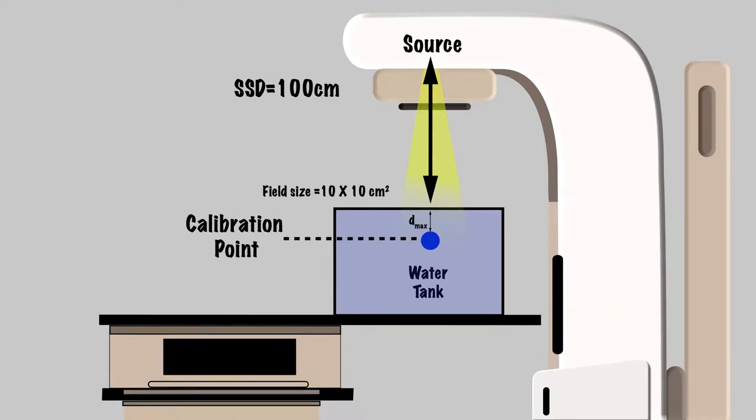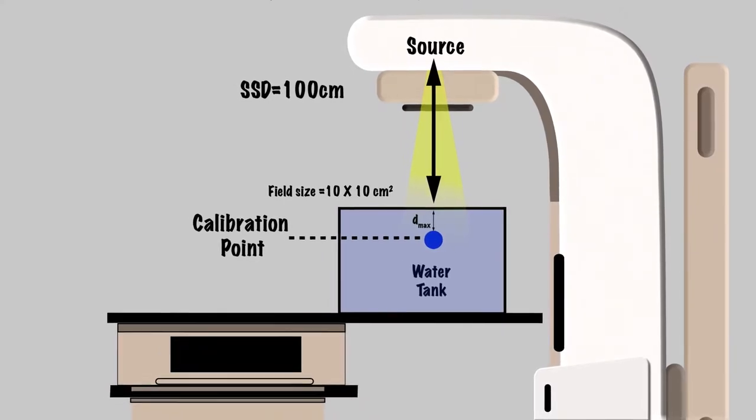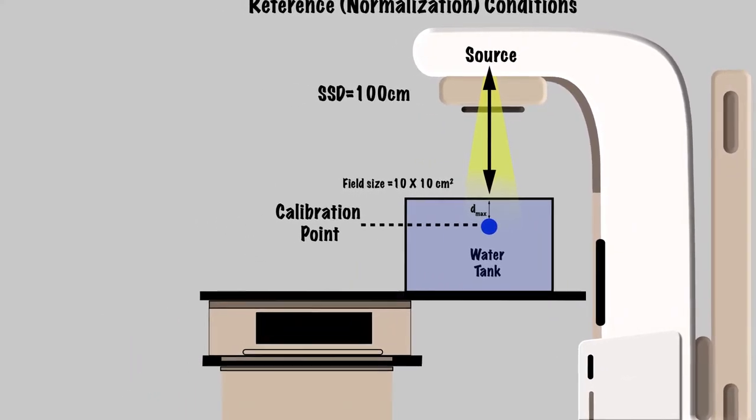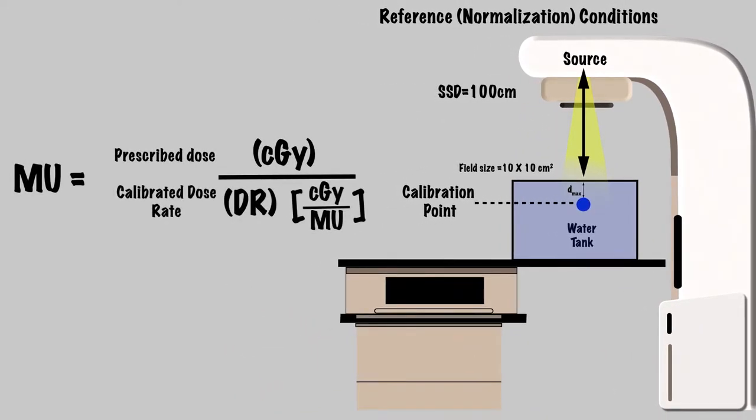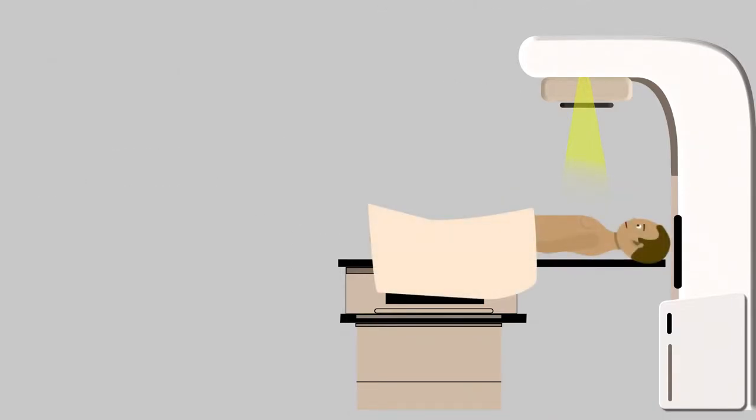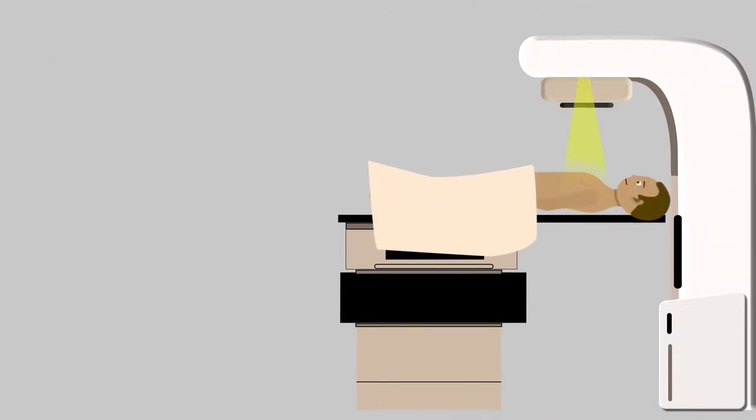If we were prescribing the dose to the calibration point under this setup, the number of monitor units would just equal the dose in centigrade. In this case, our formula would simply be prescribed dose over calibrated dose rate. However, since our treatment conditions are usually different than the reference conditions, we must account for these changes.